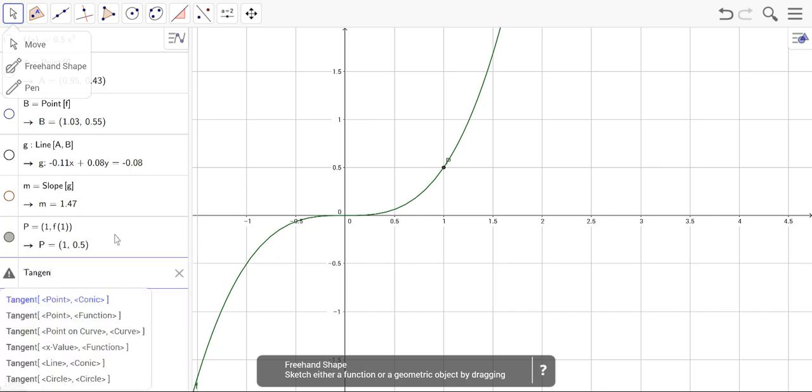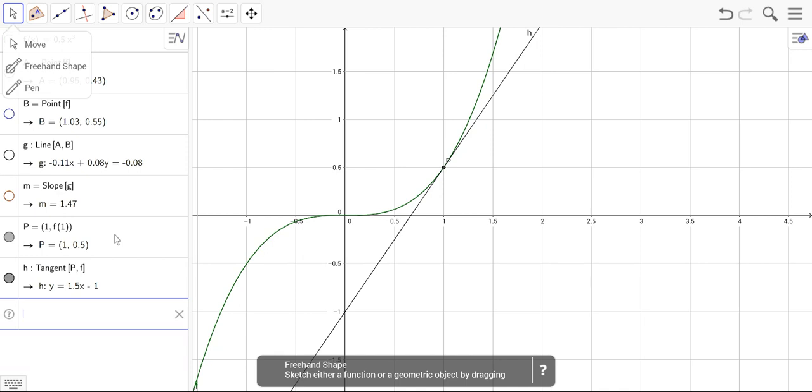Now I want the tangent. When I type in tangent, it tells me I need a point and then either a conic or a function. So I'll put my point P and my function is going to be f. So the tangent of P on the function f is y equals 1.5x minus 1.